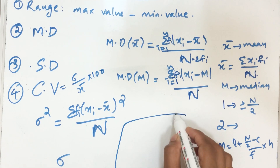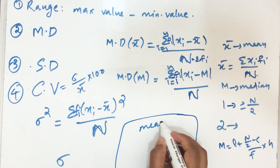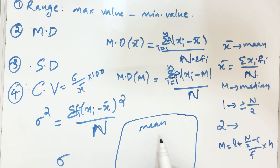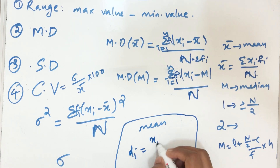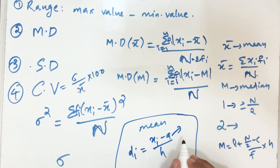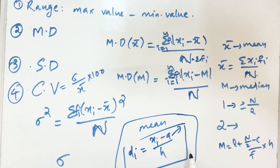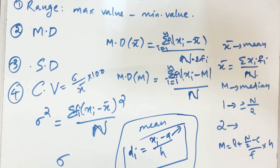We also studied the shortcut or step deviation method to find the mean and thereby mean deviation about mean and standard deviation. In this method, we define a new variable dᵢ = (xᵢ − a)/h, where a is the assumed mean (approximately the median value) and h is the common factor of deviations. This method can be used for both ungrouped and grouped data. This chapter requires studying only one or two formulas. We will discuss more questions from this chapter in the next video. If you find this video useful, please like, share, comment, and subscribe to our channel. Thank you for watching!